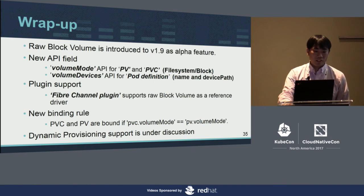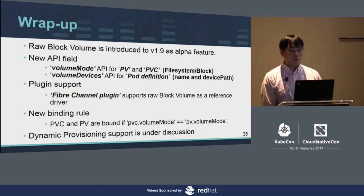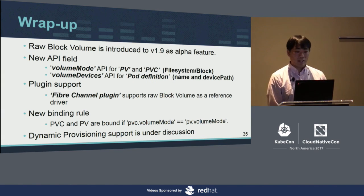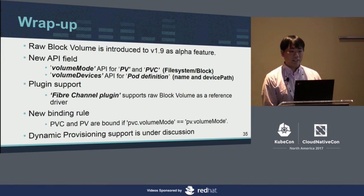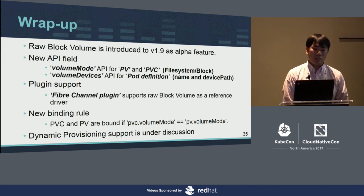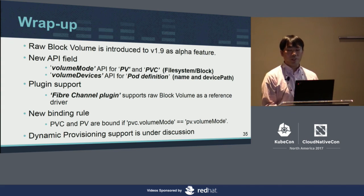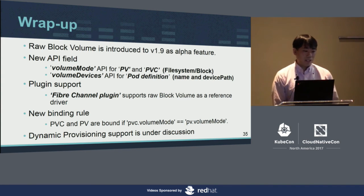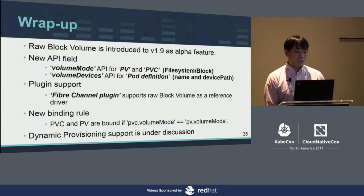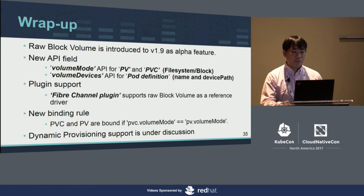Let me wrap up this session. We introduced the new raw block volume feature in version 1.9 as an alpha feature. Using this feature, users can use a raw block volume inside the container without any privileged option. We added two new API fields: `volumeMode` and `volumeDevices`. Currently, only the Fibre Channel plugin supports raw block volume. Thank you very much.